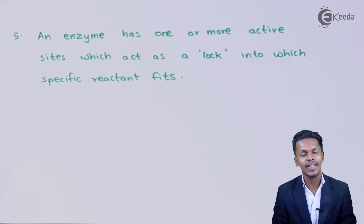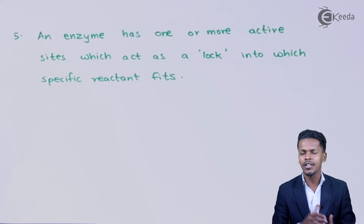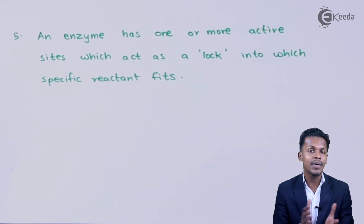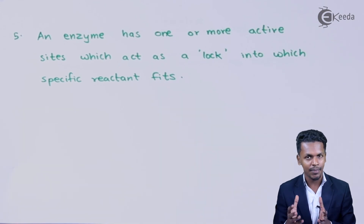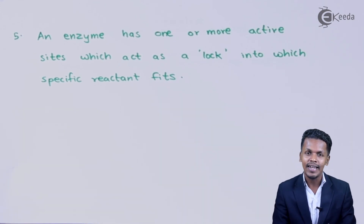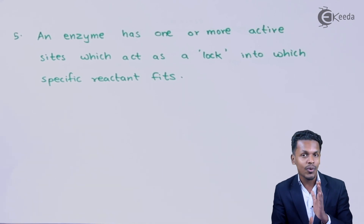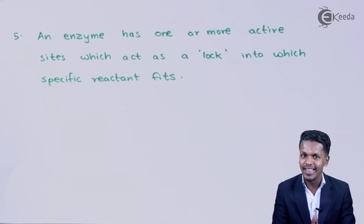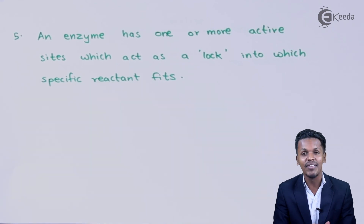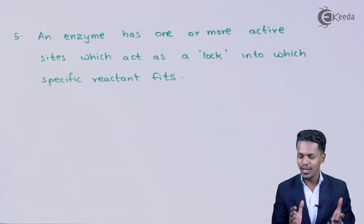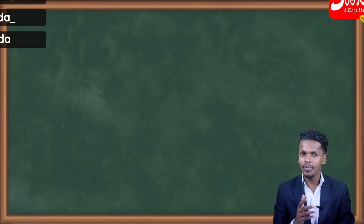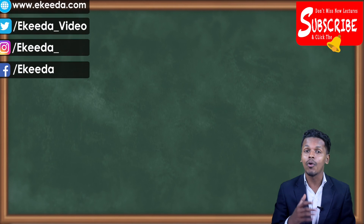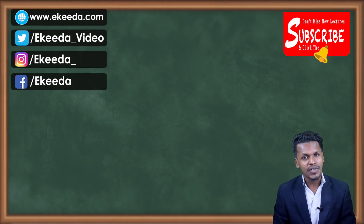If multiple reactions are possible, a particular enzyme is very specific — it will choose only one reaction at a time. This is what makes enzymes comparatively different from other catalysts. Thank you friends for watching this video. I hope you have understood what enzyme catalysts are and how they work. Please share this video with friends and don't forget to subscribe.